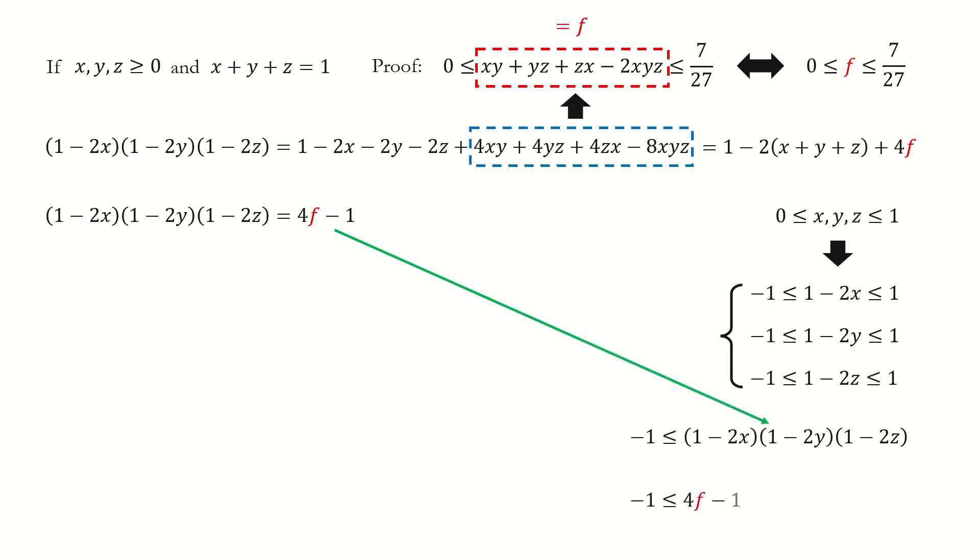Next, we replace the product with 4f minus 1. So we are done for the lower bound of f.